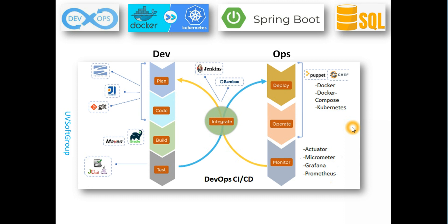Now I'm continuing to show how you can deploy the same application with Docker and Kubernetes. After that, we will integrate microservice monitoring tools using Actuator, Micrometer, Grafana, and Prometheus. I already have some tutorials on my channel you can follow to learn how to integrate such monitoring tools for microservice-based applications.